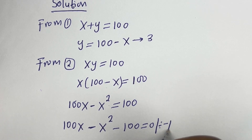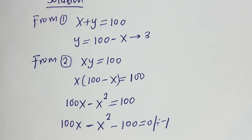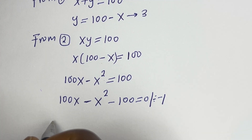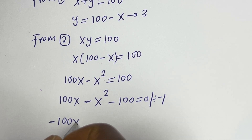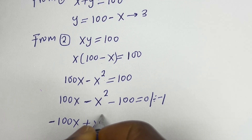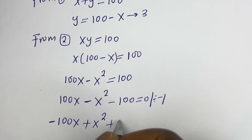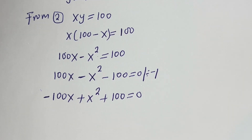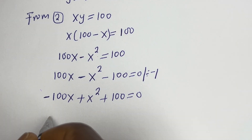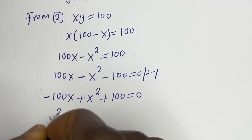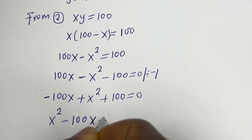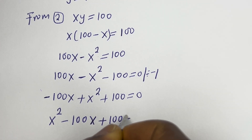Let's divide all through by minus 1. Then we have minus 100x plus x squared plus 100 is equal to 0. We can put this in standard form: x squared minus 100x plus 100 is equal to 0.